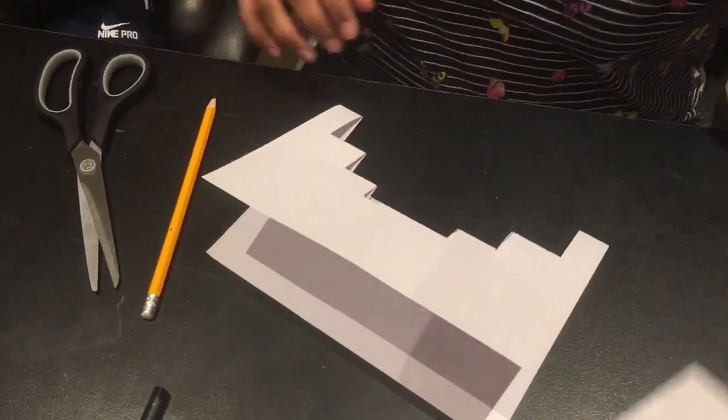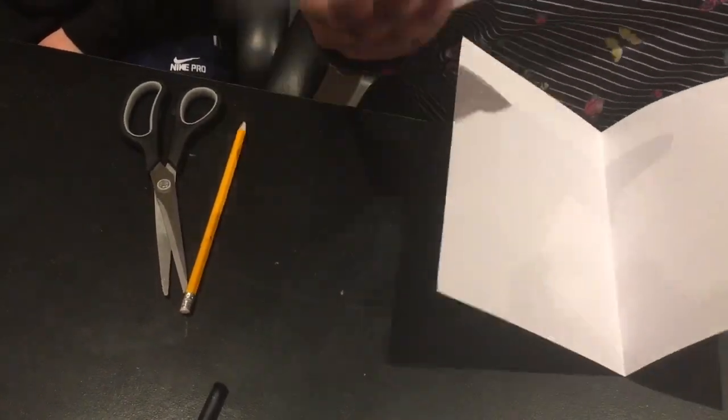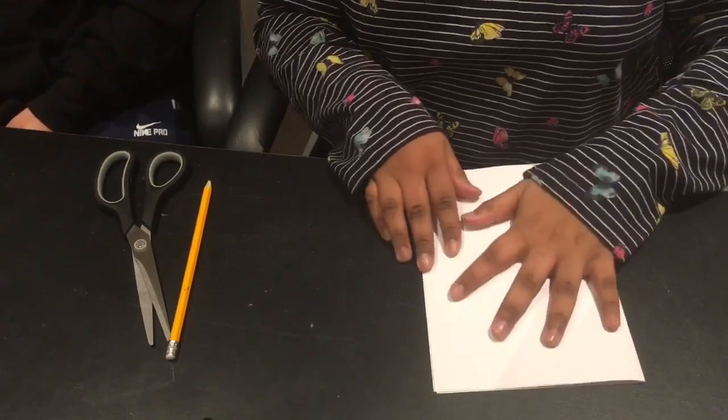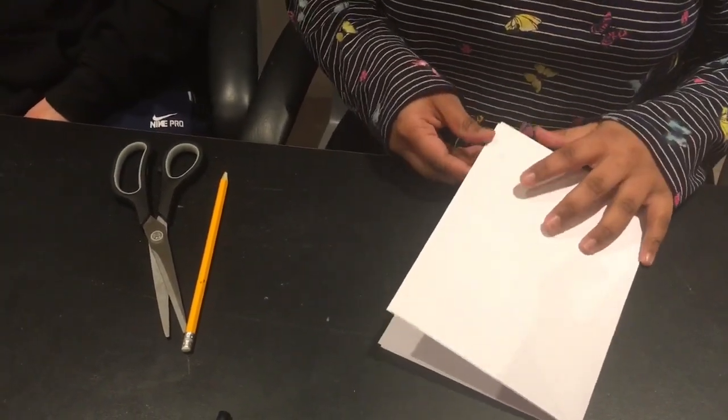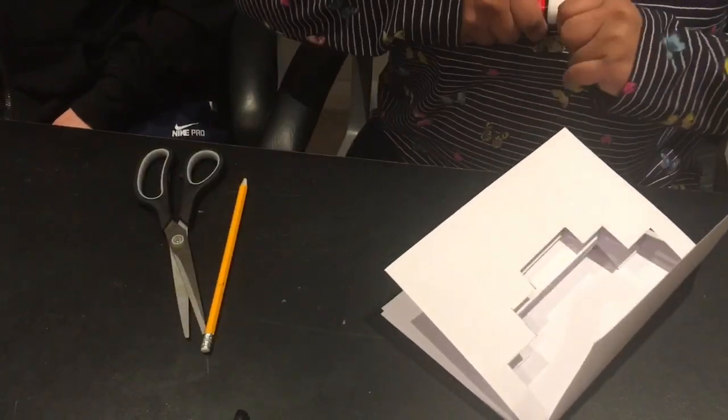Next, you need to take your other sheet of paper and put the sheet that you've just worked on into it and check if it looks neat. And then you need to stick them both together using your glue stick.